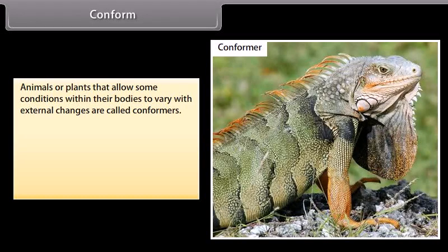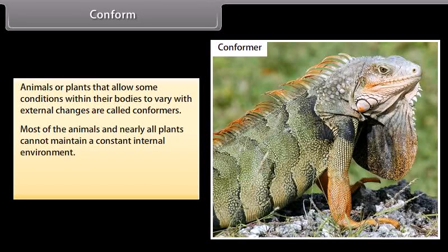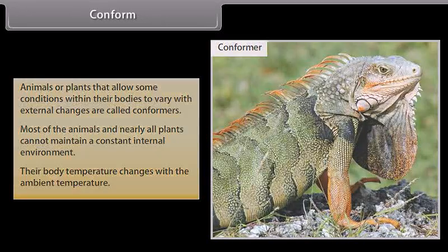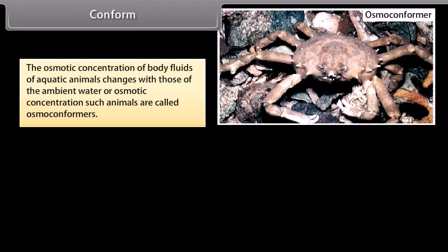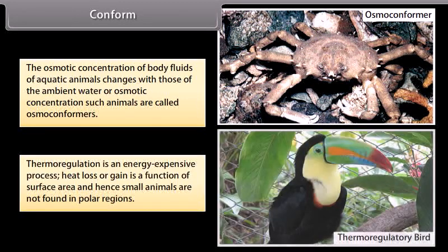Animals or plants that allow some conditions within their bodies to vary with external changes are called conformers. Most animals and nearly all plants cannot maintain a constant internal environment; their body temperature changes with the ambient temperature. Aquatic animals whose osmotic concentration changes with that of the ambient water are called osmoconformers. Thermoregulation is an energy-expensive process; heat loss or gain is a function of surface area, and hence small animals are not found in polar regions.